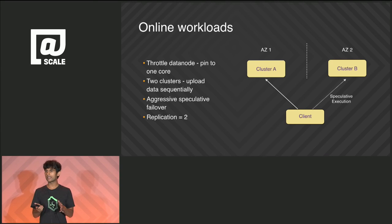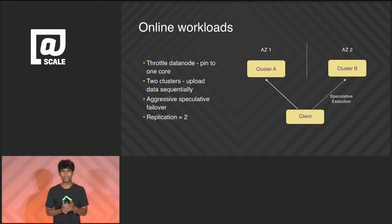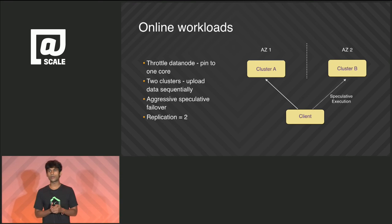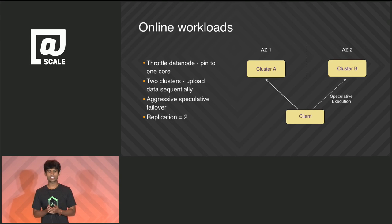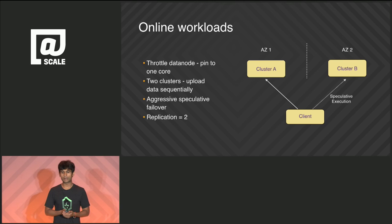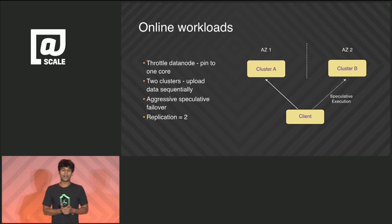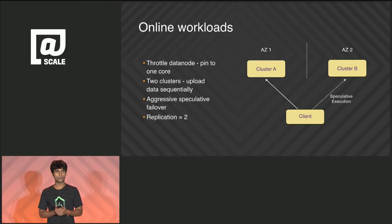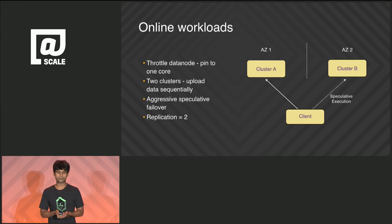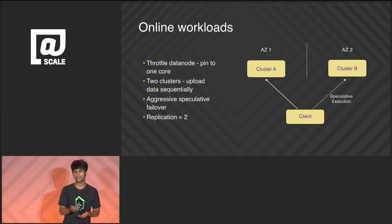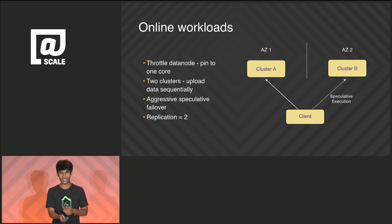We use two clusters in two different availability zones and upload to them sequentially to not overload them at the same time. We use speculative execution — run a request against cluster A, and if it doesn't come back fast enough, spawn another against cluster B and pick whichever comes back sooner. We also run with a lower replication factor since we're using two clusters and don't want to store six copies of the data, and we have not found any issues with that.